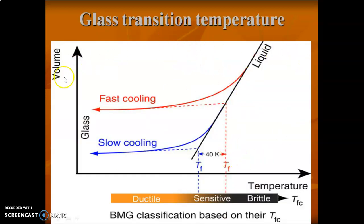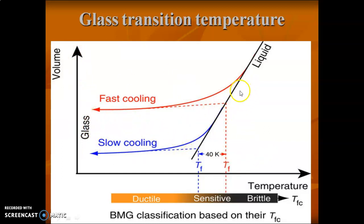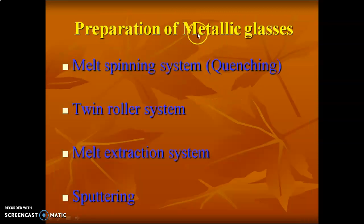The glass transition temperature is the temperature at which the material changes to a glass. When the material is taken in a crucible and heated to a high temperature, then allowed to cool down, the temperature at which it changes into glass is called the glass transition temperature.